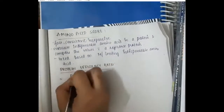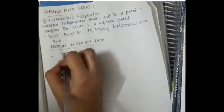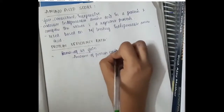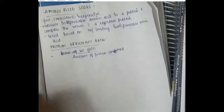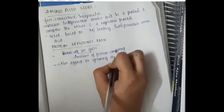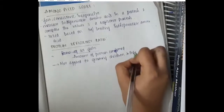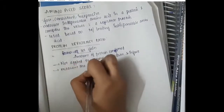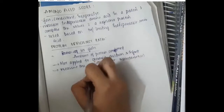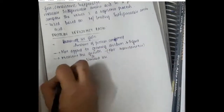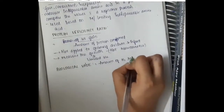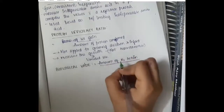The next score is protein efficiency ratio, given as weight gain divided by amount of protein consumed. It measures the growth of an individual with a particular protein. It is not applied to growing children and infants, and has limited use.